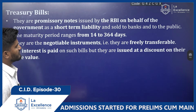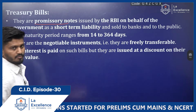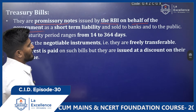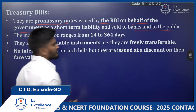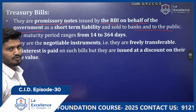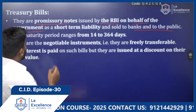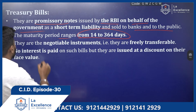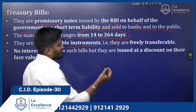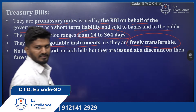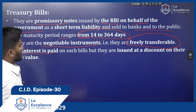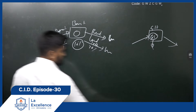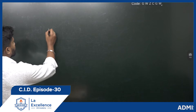Treasury Bills are promissory notes issued by the RBI on behalf of the government as a short-term liability, sold to banks and to the public. The maturity period ranges from 14 to 364 days. They are negotiable instruments, meaning they are freely transferable from one individual to another.